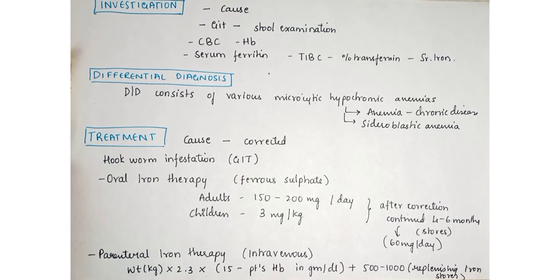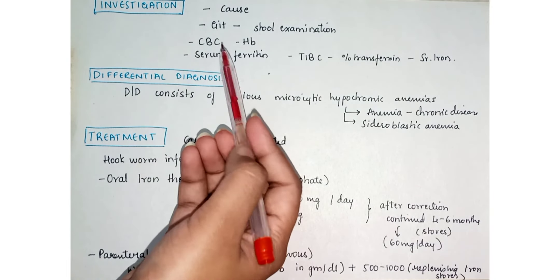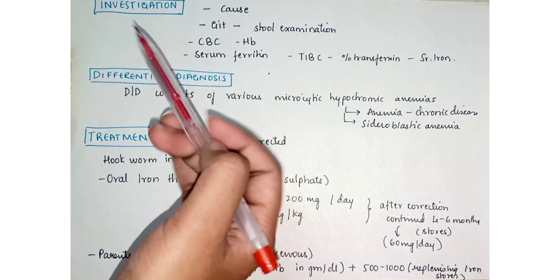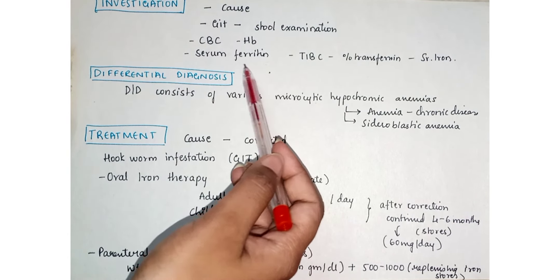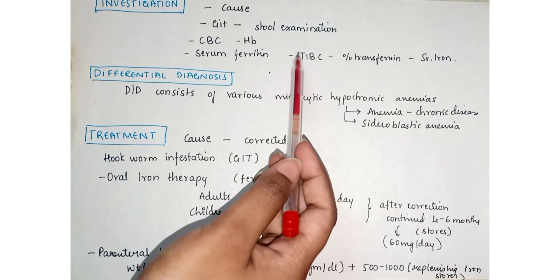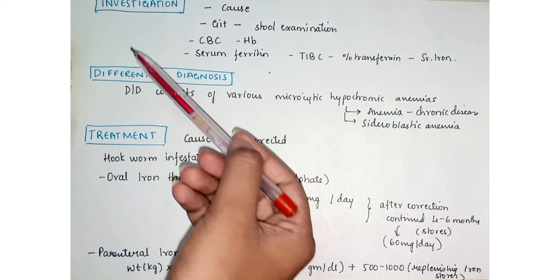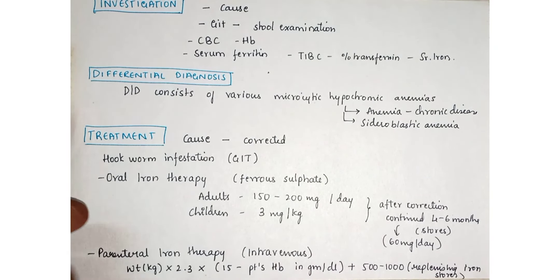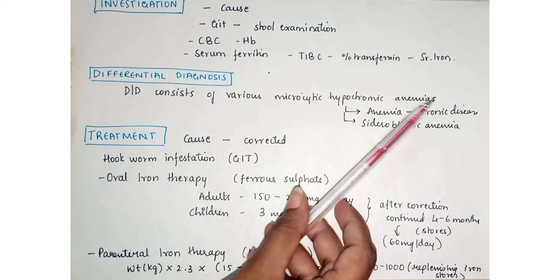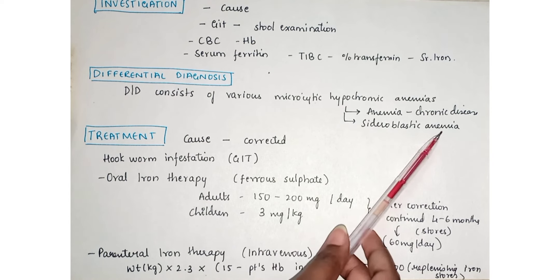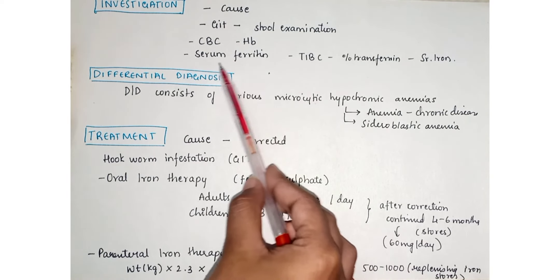In investigations, we should first find the cause — whether it is reduced iron intake or blood loss due to GIT issues such as hemorrhoids. Stool examination for blood and serum ferritin, TIBC, transferrin saturation, serum iron, CBC, and hemoglobin all help in concluding the diagnosis. Differential diagnoses include other microcytic hypochromic anemias such as anemia of chronic disease and sideroblastic anemia, which can be differentiated using these parameters.